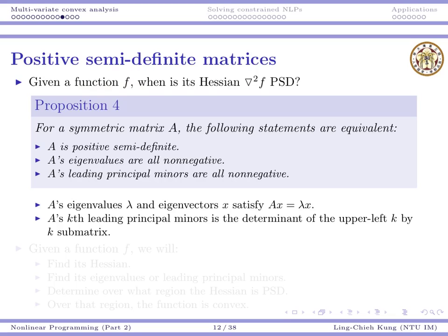Given a function f, we want to check whether the Hessian matrix is positive semi-definite. If the Hessian matrix is positive semi-definite, then the function is convex. We need a way to show positive semi-definiteness, but we do not want to apply the definition directly because it may be hard. For a symmetric matrix A, the following statements are equivalent: A is positive semi-definite; A's eigenvalues are all non-negative; or A's leading principal minors are all non-negative. These three things are equivalent — positive semi-definite if and only if all eigenvalues are non-negative if and only if leading principal minors are all non-negative.